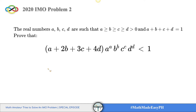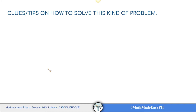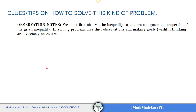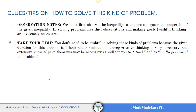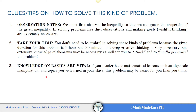Before we solve this problem, I'll show you some tips and strategies I use. Tip number one: Observation. We must first observe the inequality so that we can guess its properties. Making observations and setting goals or doing wishful thinking are extremely necessary in solving problems like this. Tip number two: the given time for this problem is one hour and thirty minutes, so deep creative thinking is very necessary.